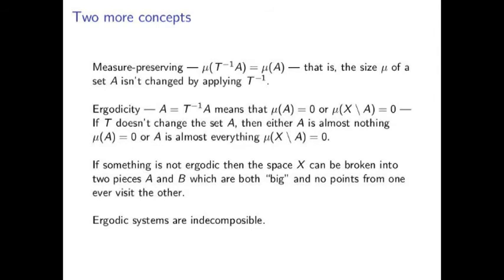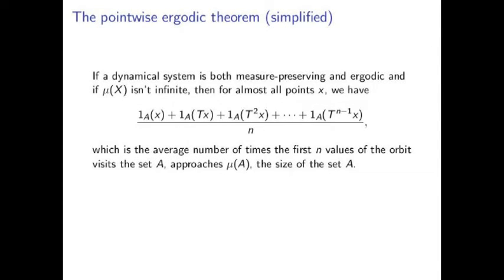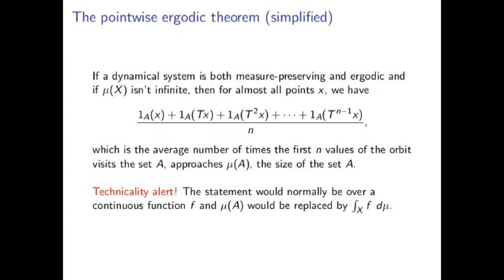Now for the ergodic theorem. A simplified form of the pointwise ergodic theorem says that if our system is ergodic and measure-preserving, then for almost all points, the frequency for which an orbit visits a set equals the measure of that set. Now that is pretty cool. In our example, this says that for almost all real numbers, they should visit the set between 0.7 and 0.8, about 0.8 minus 0.7, or one-tenth of the time. That is, we expect to see sevens one-tenth of the time.